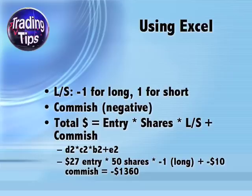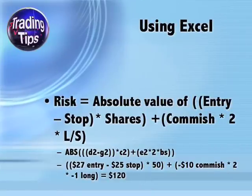For our first formula — Total Dollars — the total dollar sign is the total amount you put up, equal to the total cost of your shares plus the opening commission. The formula for this is listed in textual form, in Excel formula form, and with an example.